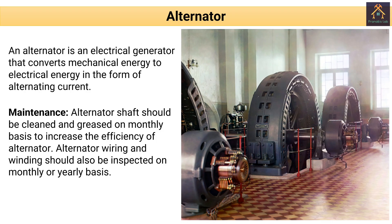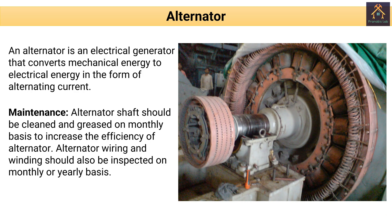Next, the alternator. An alternator is an electrical generator that converts mechanical energy into electrical energy in the form of alternating current. The alternator shaft should be cleaned and greased on a monthly basis to increase the efficiency of the alternator. The alternator wiring and windings should also be inspected on a monthly or yearly basis.